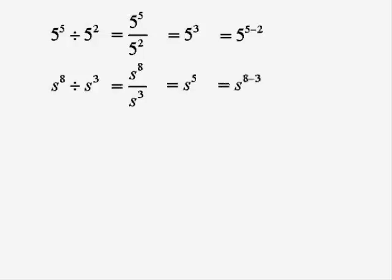And in this second one, S to the 8 divided by S cubed gives us S to the power of 8 minus 3, which ends up as S to the 5. And so that's actually the rule.